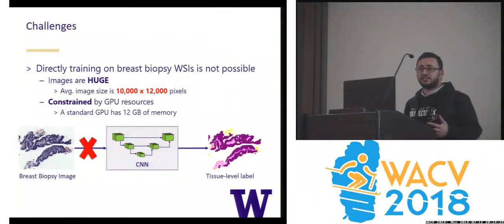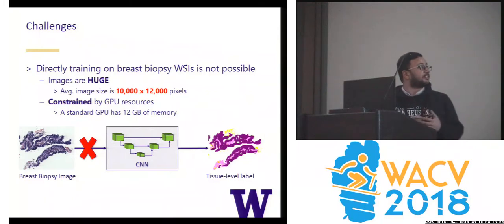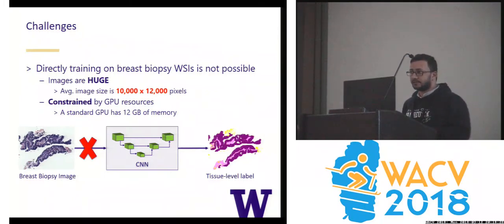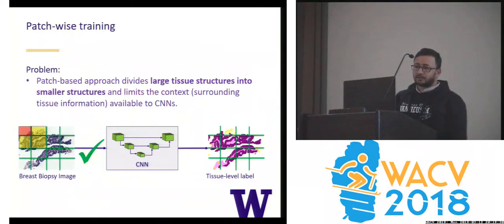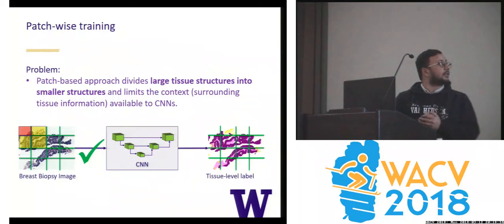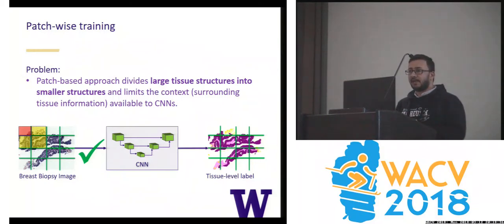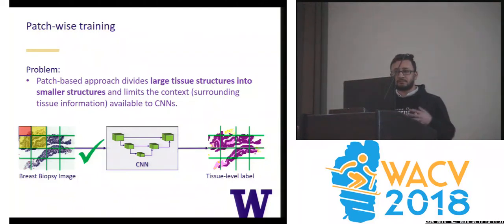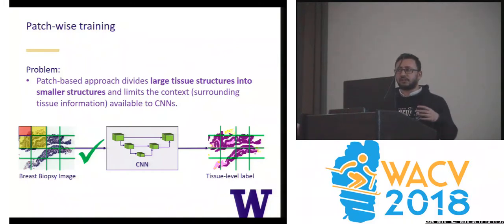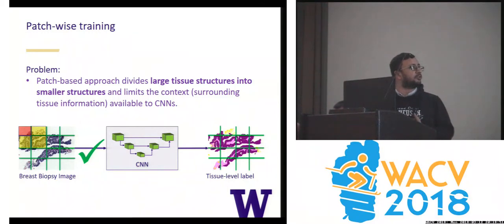Training directly on these images is not possible because these images are very big and we have very limited GPU resources. One potential approach for training CNNs on these images is to use a patch-wise approach — you take a whole slide image, split it into patches, and train a CNN network. But the problem comes with the large tissue structures: when we divide an image into patches, we divide the larger tissue structures into smaller structures, and that limits the context available to the CNN.